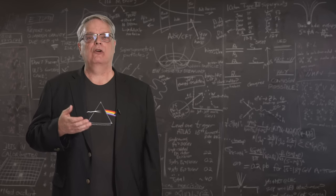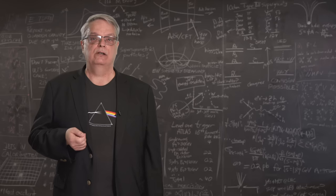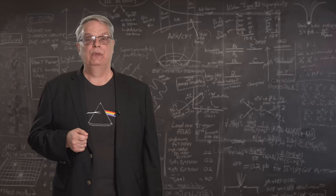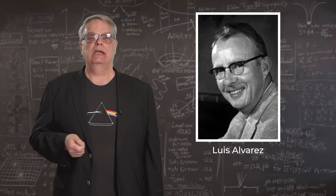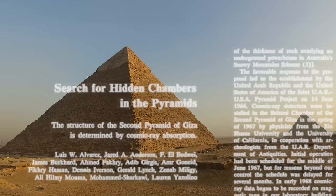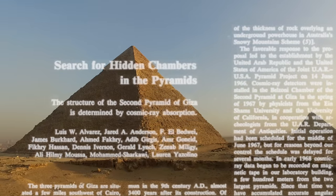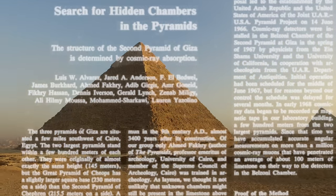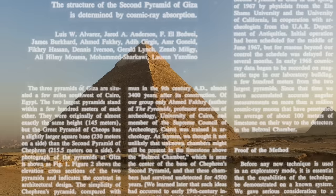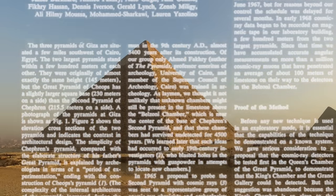Muon tomography as a tool for archaeological studies was pioneered back in the late 1960s. A team led by physics great Luis Alvarez studied the Pyramid of Khafre, which is the second largest of the Great Pyramids. They looked for hidden rooms inside it, and they found none. A link to the paper is in the video description.